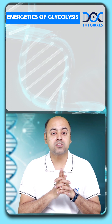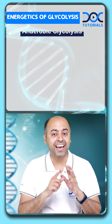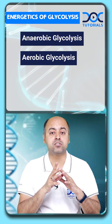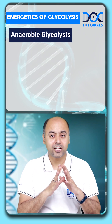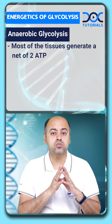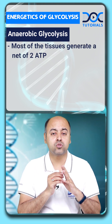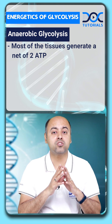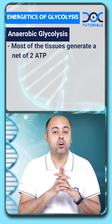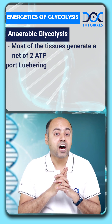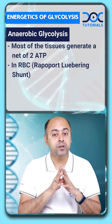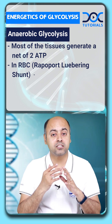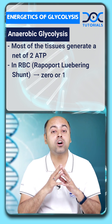We describe glycolysis under two conditions: anaerobic glycolysis and aerobic glycolysis. Under anaerobic conditions, most tissues carrying on glycolysis will generate a net of 2 ATP. However, in the RBC, where the Rapoport-Luebering shunt is operative, the net gain is only either 0 or 1 ATP.